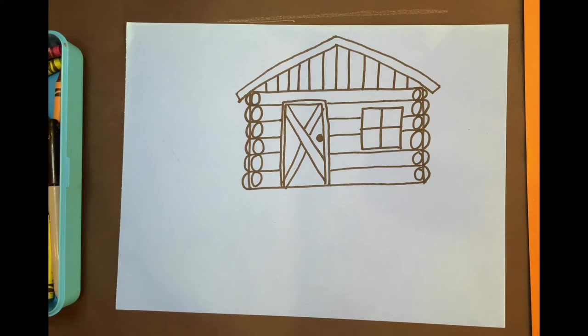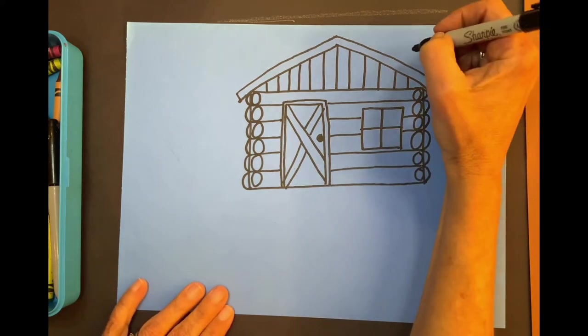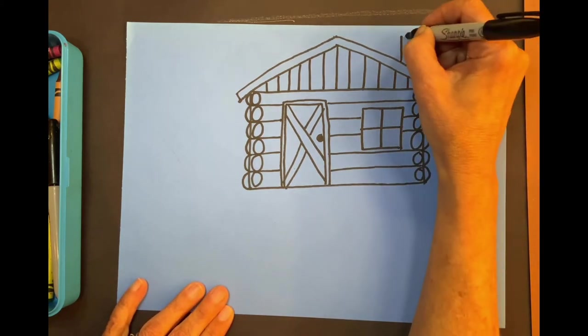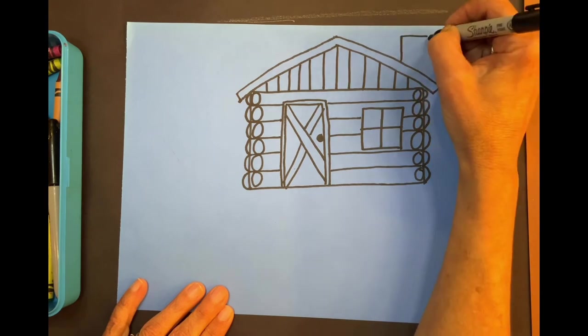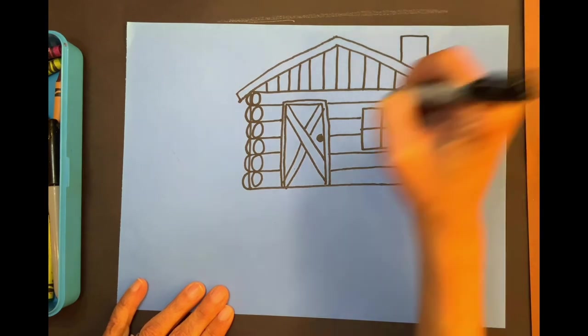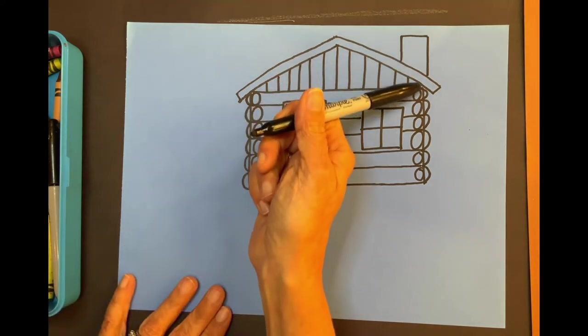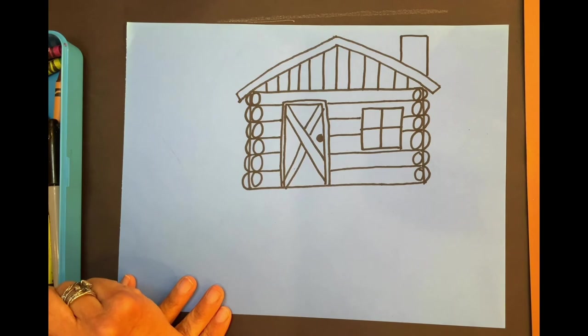Great. How about a fireplace chimney? It can be on the left side or the right side. Watch me and mine's going to be on the right side. I'm going to go up, across, and down like that. It's a rectangle, but the bottom of it, you can't see it because it's inside the house.